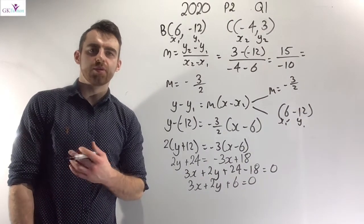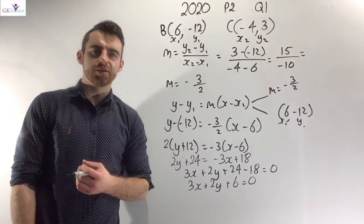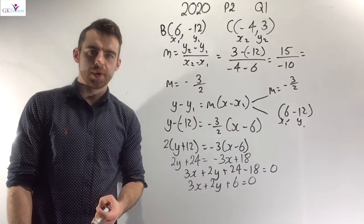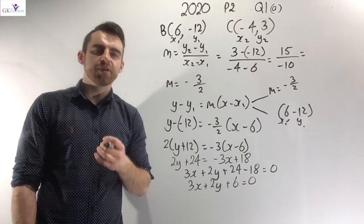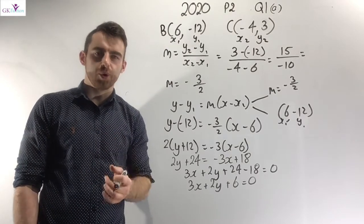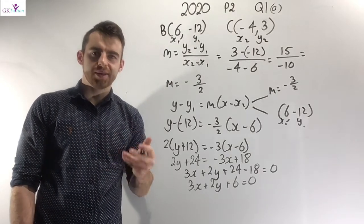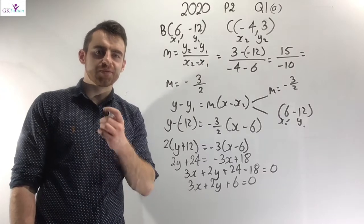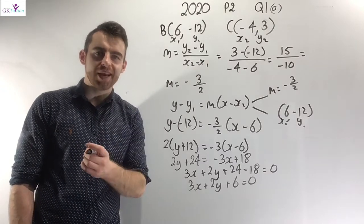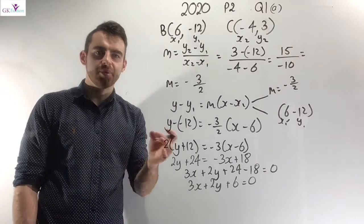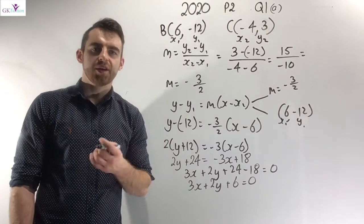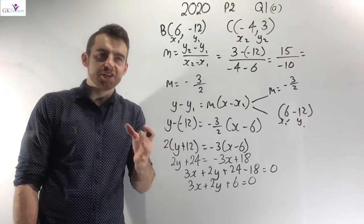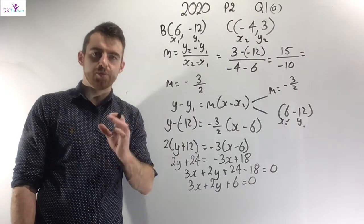In this tutorial I want to talk about 2020 Paper 2 Question 1. In Part A we're given three different points A, B and C and we're asked to get the perpendicular distance from the point A to the line BC, and then use this answer to determine the relationship between the three points.